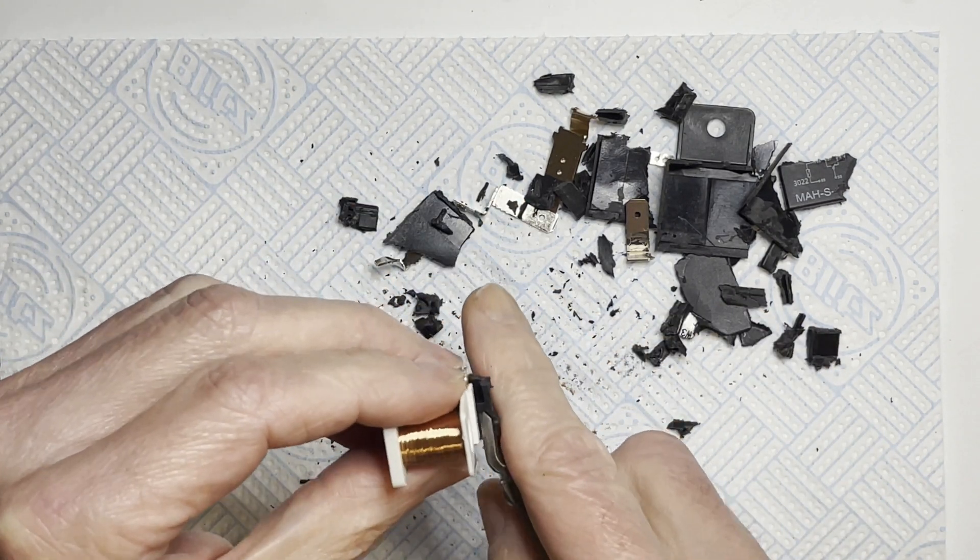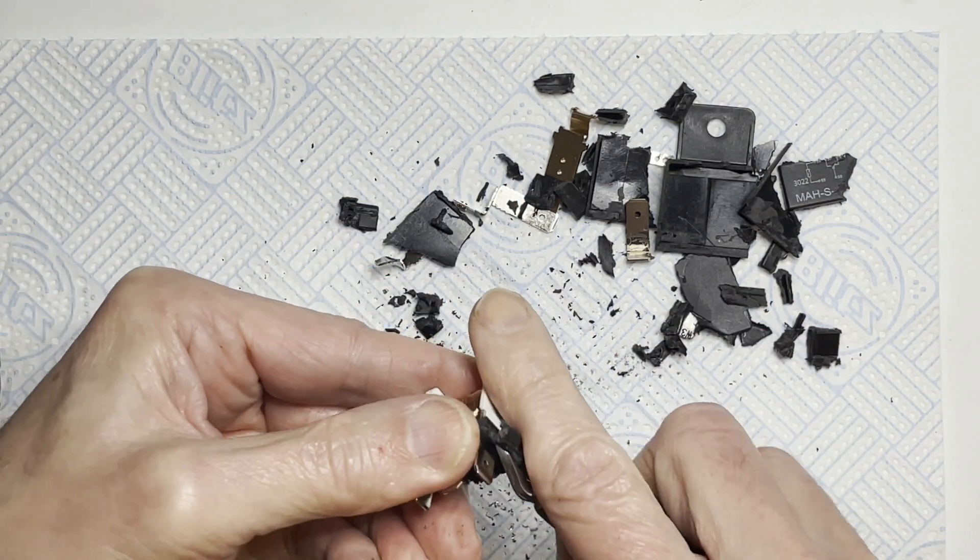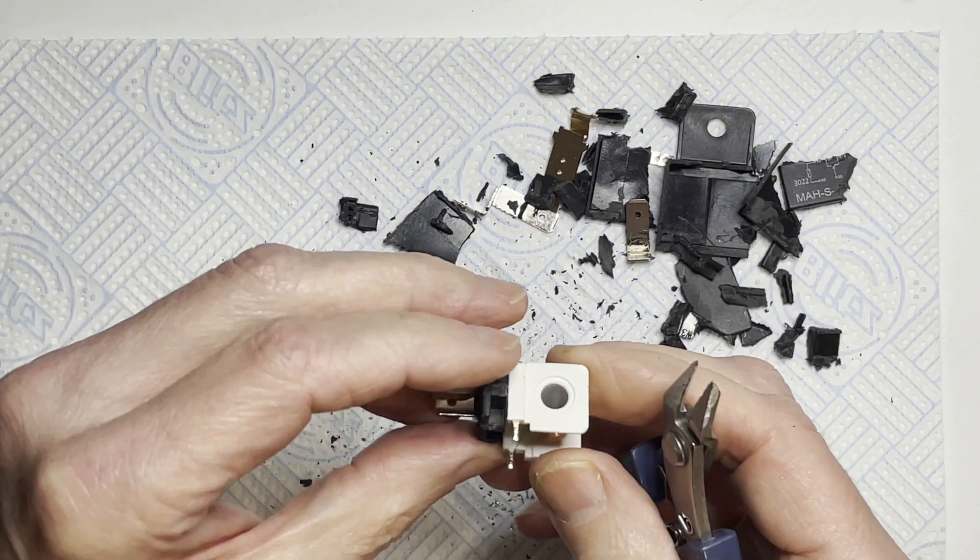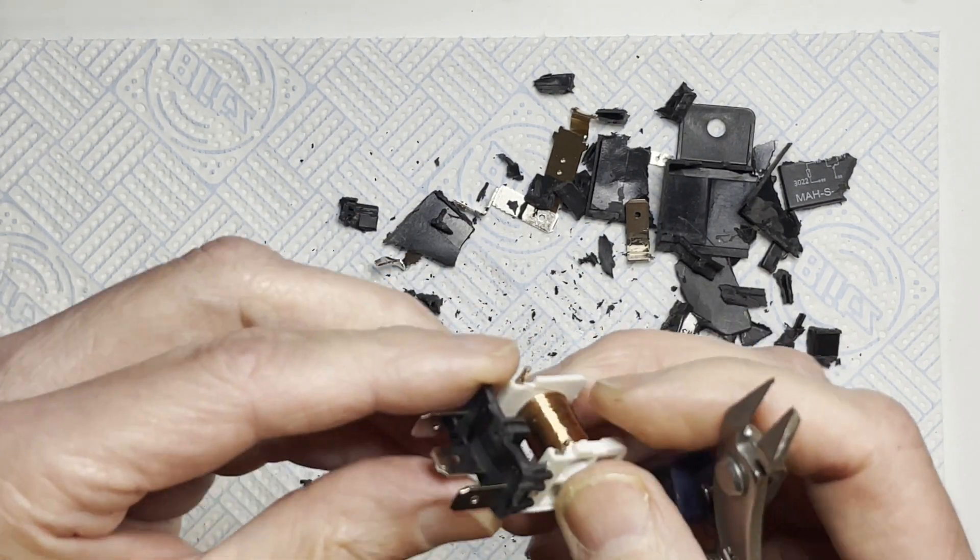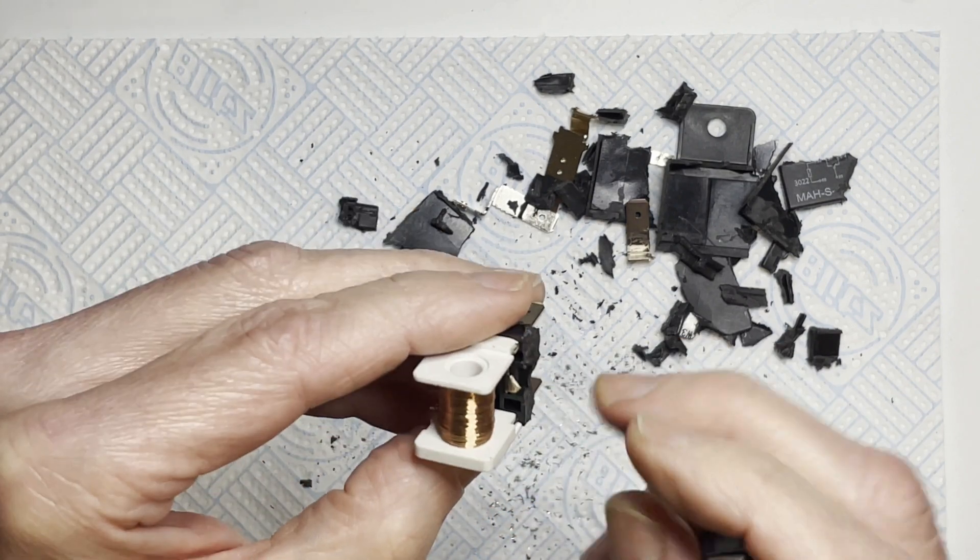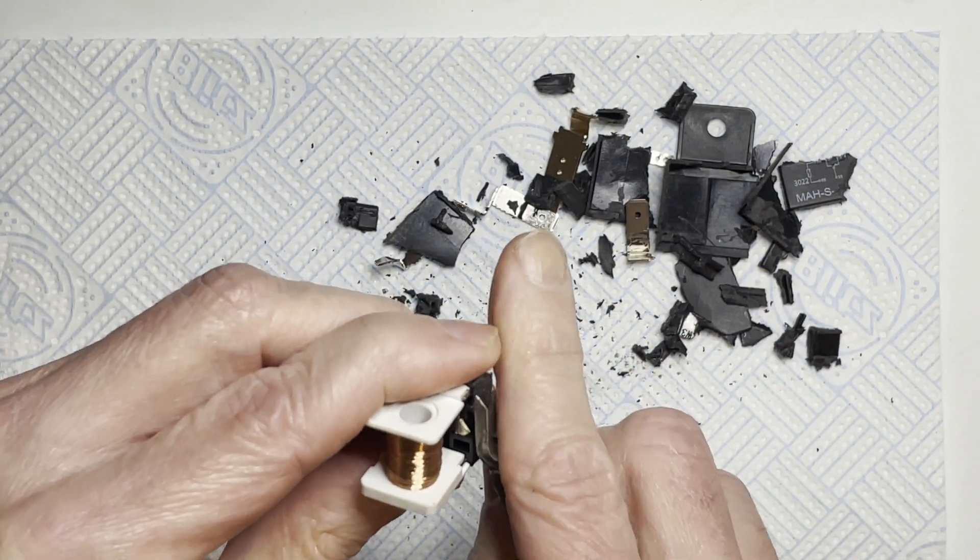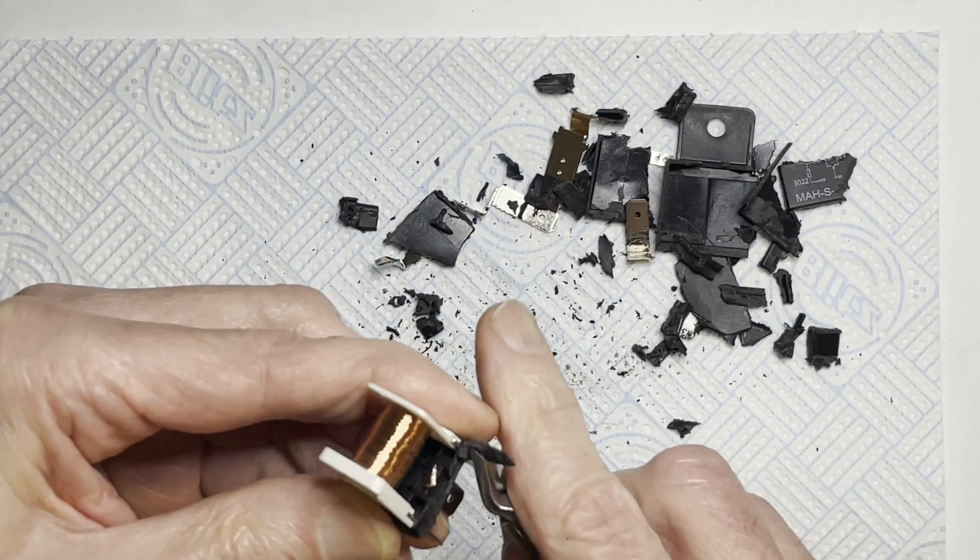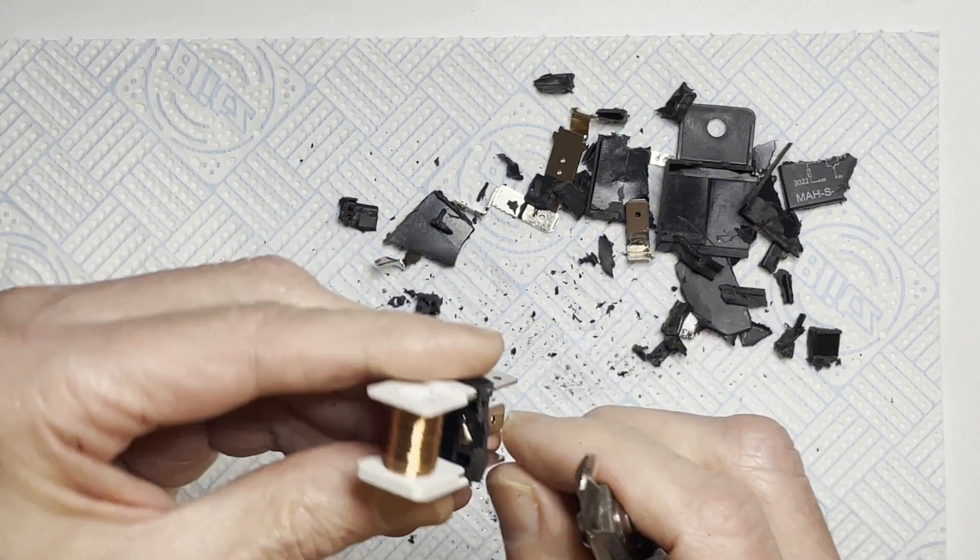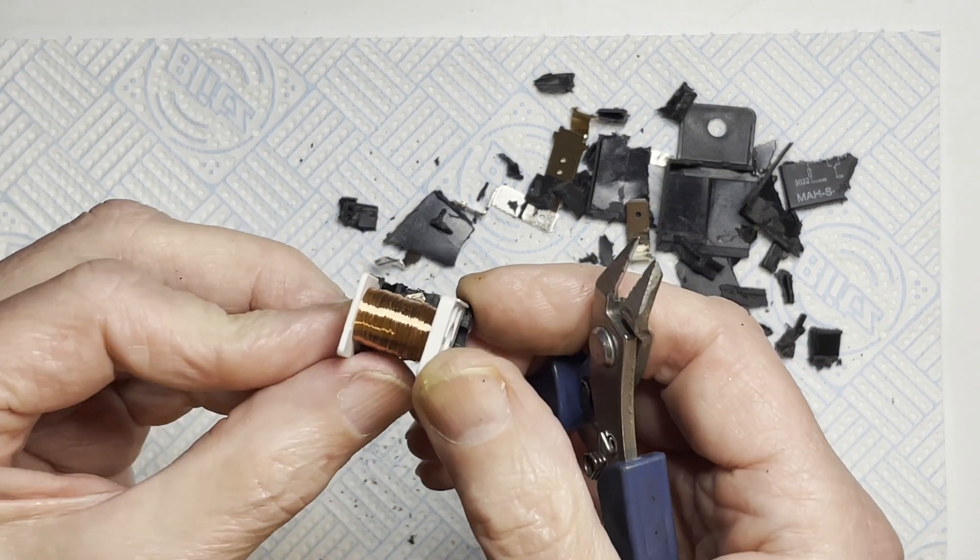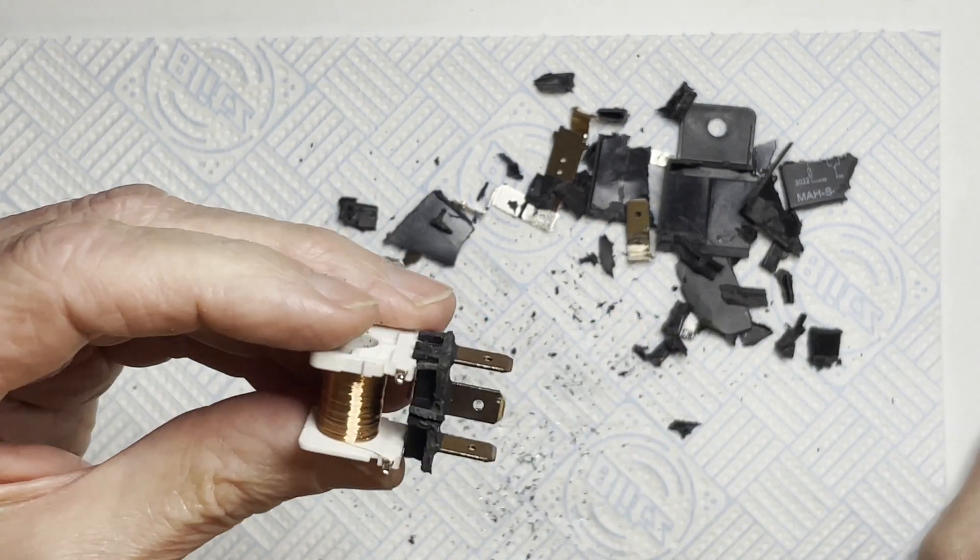I might as well take that side off as well, get it a bit nearer to the side of the coil frame. Now that end is not flat. It could be. It's a bit better. And that's the coil.